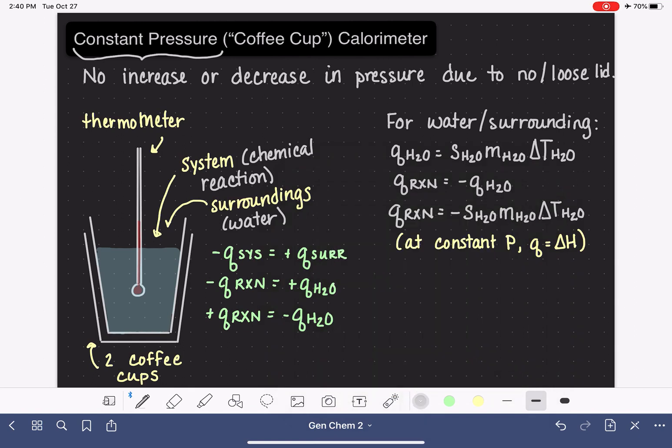With that in mind, we could replace this Q with a delta H because we are under constant pressure. And we get a new equation: delta H of the chemical reaction that's taking place inside of our calorimeter is negative specific heat of water times the mass of the water inside the calorimeter times the temperature change of the water.